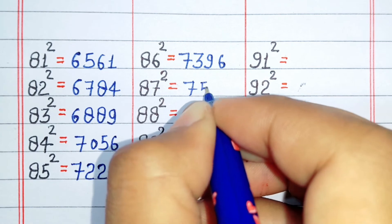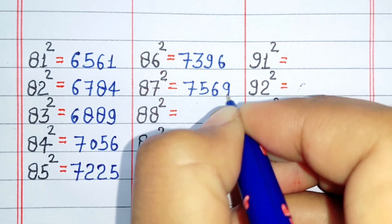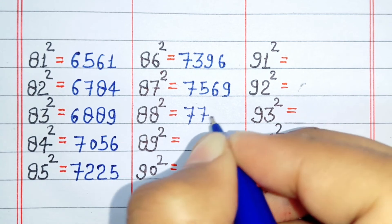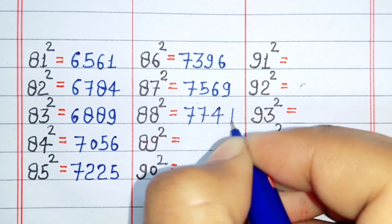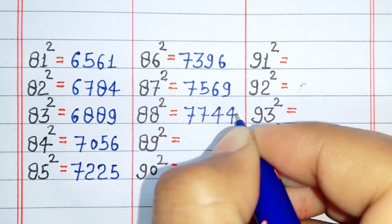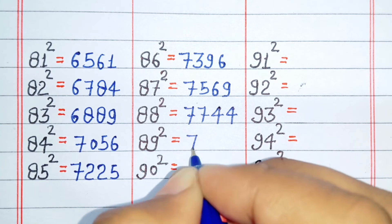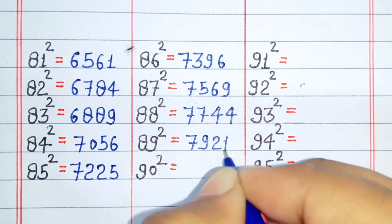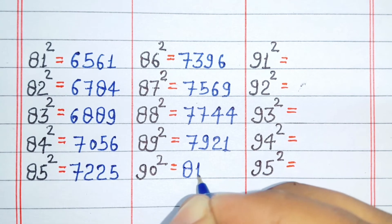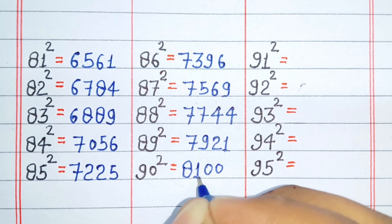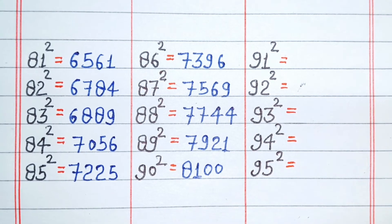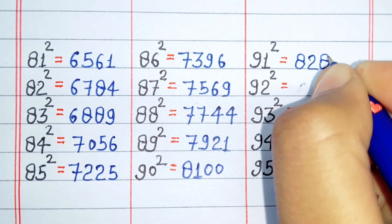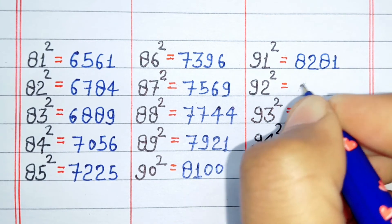Square of 87 is 7569. Square of 89 is 7921. Square of 90 is 8100. Square of 91 is 8281.